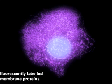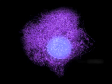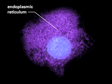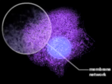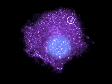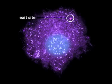Fluorescently labeled membrane proteins start their journey to the plasma membrane after synthesis in the endoplasmic reticulum. They are first dispersed throughout the extensive membrane network of the endoplasmic reticulum from where they move to exit sites that form in random locations in the membrane network.